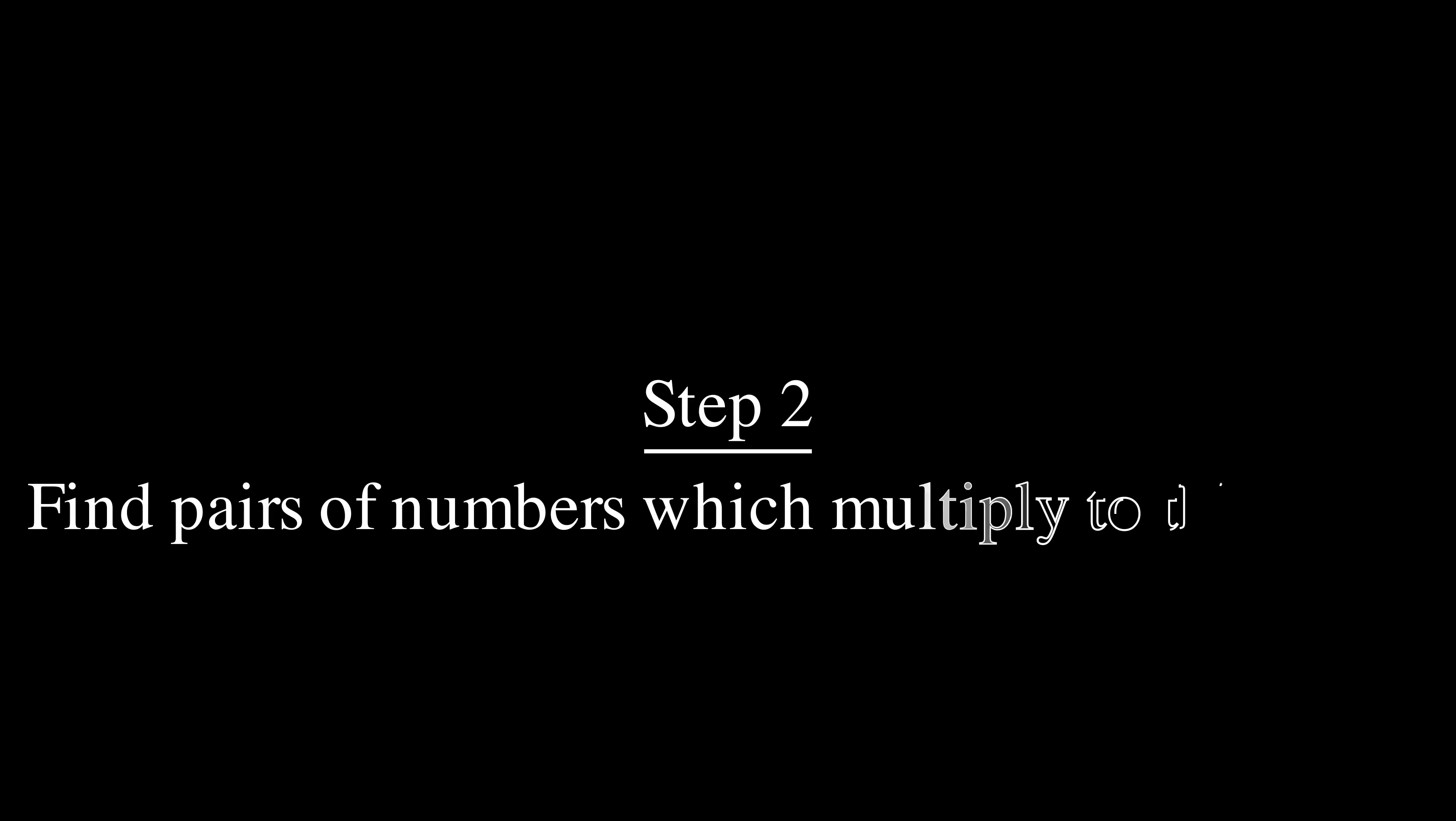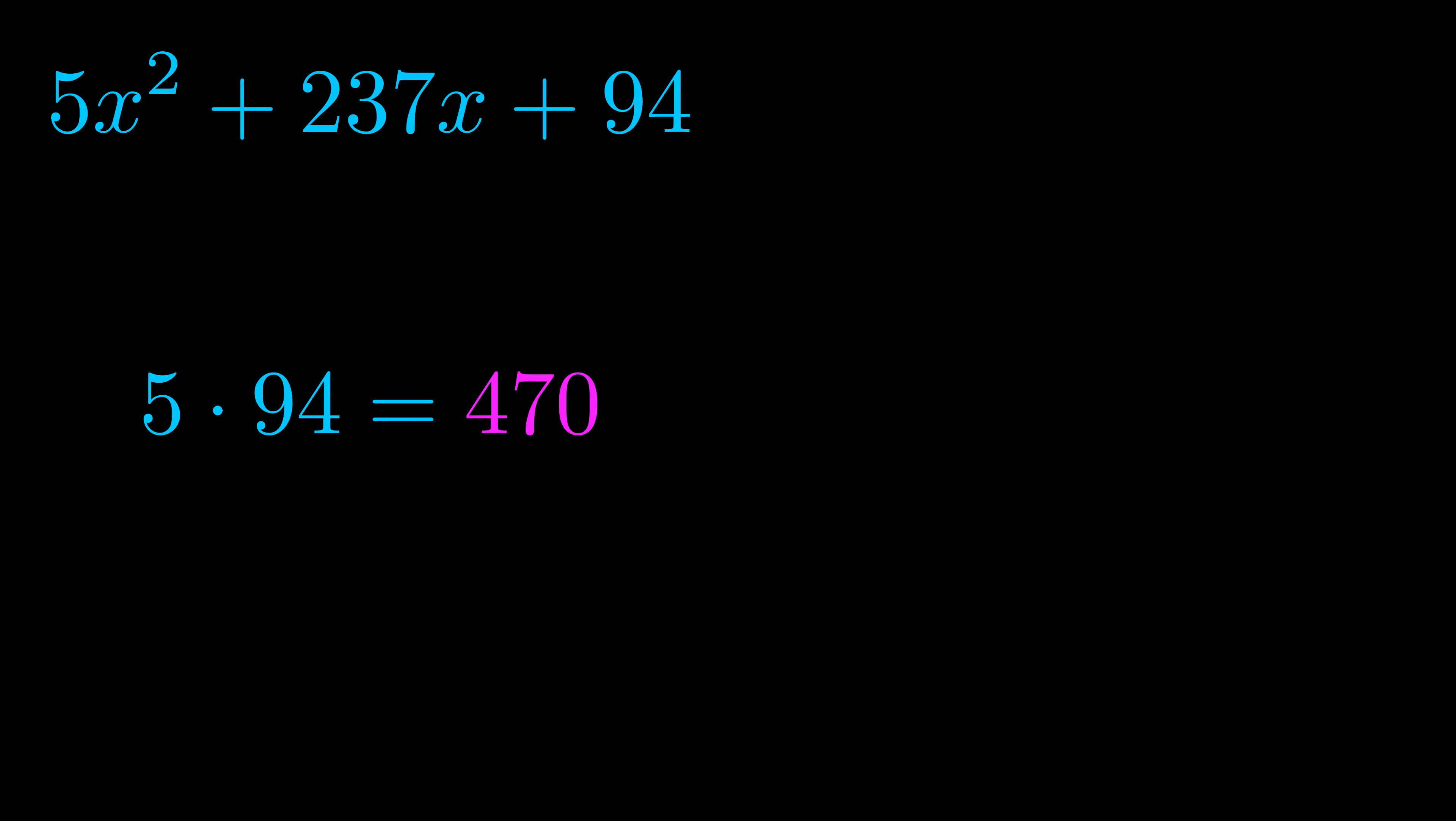Step two is to try to find all of the pairs which multiply to this number. Now it turns out you don't really need to find all of them, but go ahead and write down as many numbers as you can that multiply to the magenta value for now. Pause the video and resume when you're ready to continue. Okay, here's what I came up with.